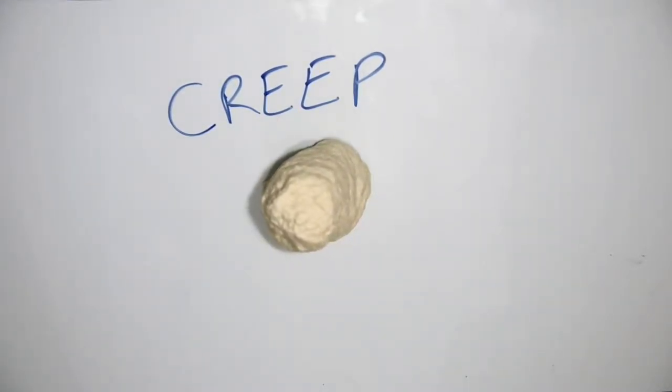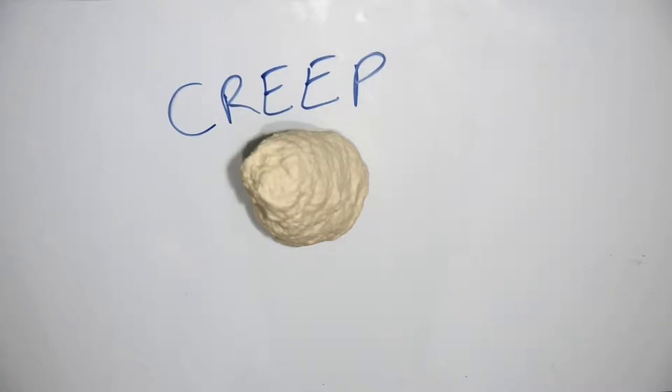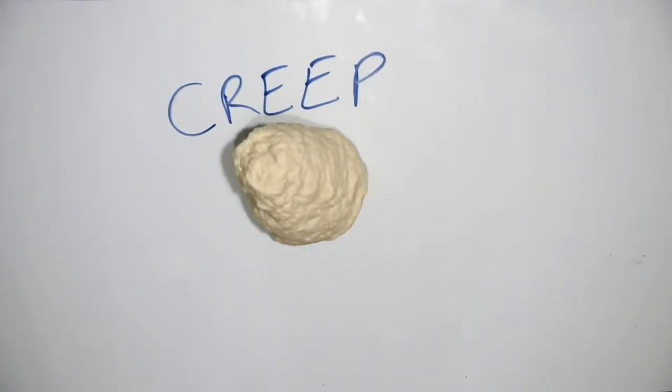Why does this happen? Well, when a polymer is subjected to a force, it will first deform elastically, like a spring. When you remove the force, the polymer goes back to its original shape. If you leave the force on the polymer over time, however, the polymer will start to become permanently deformed. This is called creep.